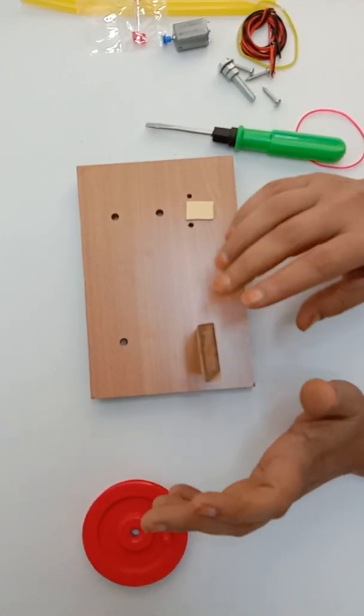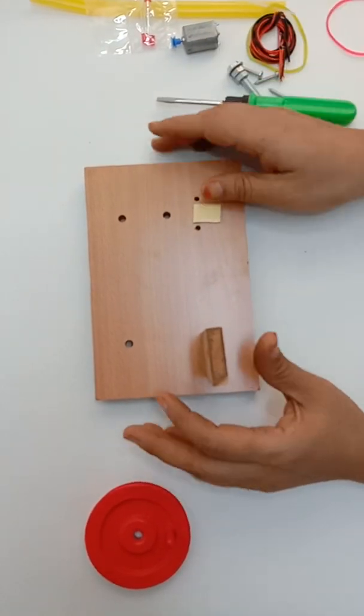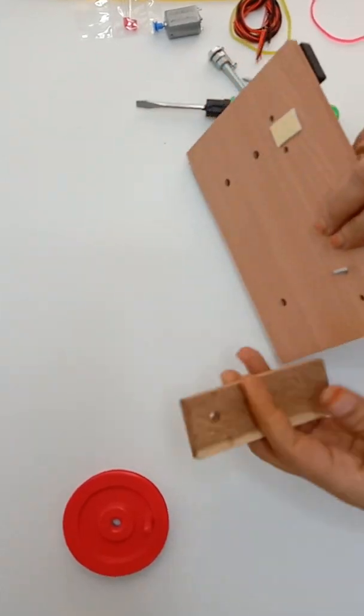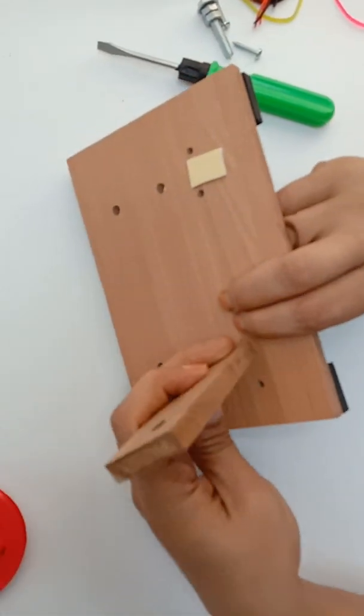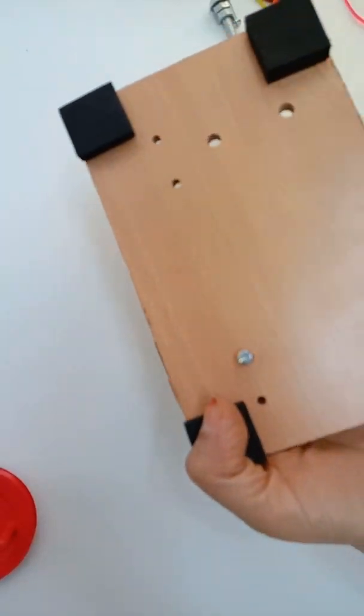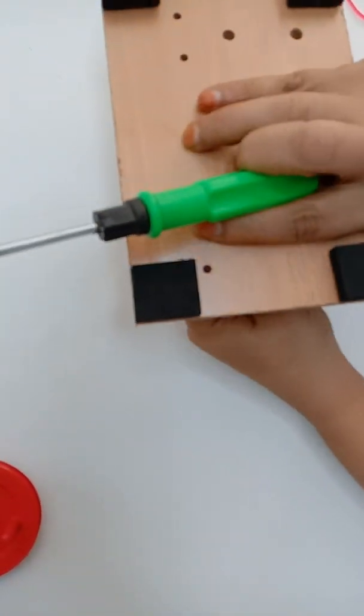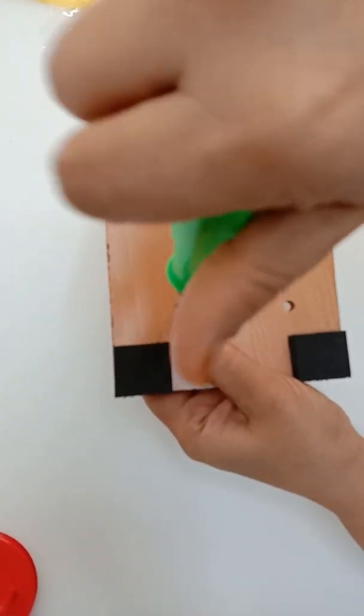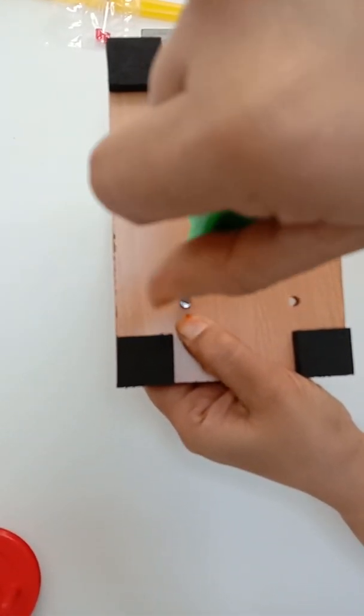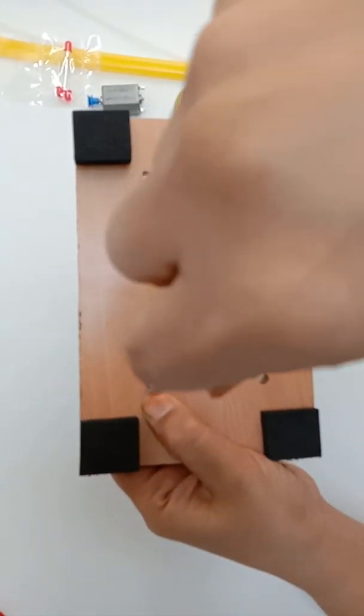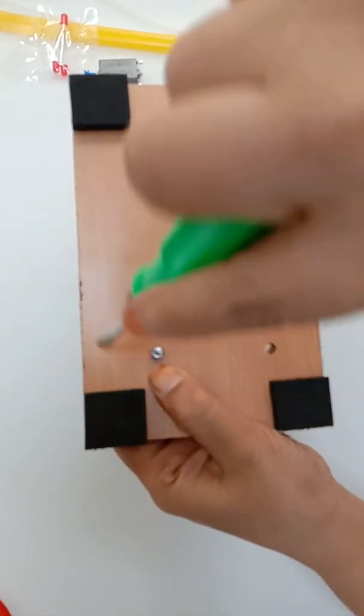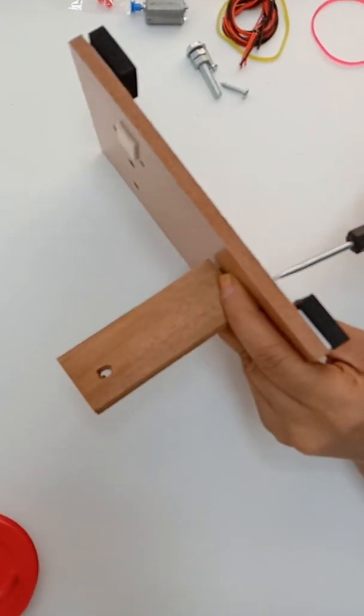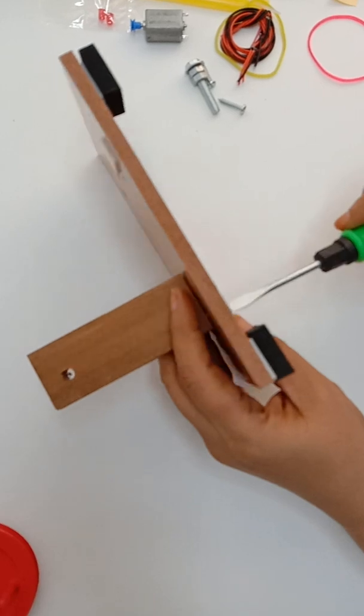For this you will be needing a screwdriver which is not provided in the kit. You are supposed to arrange it at home. Now hold this batten with your hands.